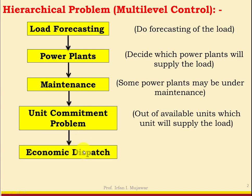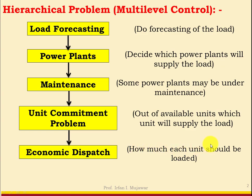Then next comes economic dispatch or economic load dispatch. In economic dispatch we are deciding how much each unit should be loaded. For example, suppose there is a unit of 100 MW rated capacity — should it be loaded to 80 MW, 70 MW, or 20 MW? Unit commitment is the selection of units that will cater to the load, whereas economic dispatch means how much each selected unit should be loaded.